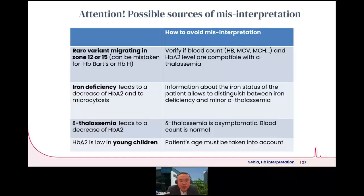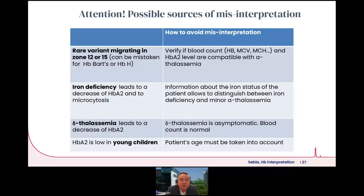It is important to be aware of possible sources of misinterpretation. In the zones where you see hemoglobin Barts or hemoglobin H, a rare variant migrating in those zones is possible. Always verify the blood count and check whether the A2 levels are compatible with alpha thalassemia. Iron deficiency can also lead to a decrease of hemoglobin A2 and microcytosis — always rule out iron status influences before concluding thalassemia. Delta thalassemia can similarly decrease hemoglobin A2.